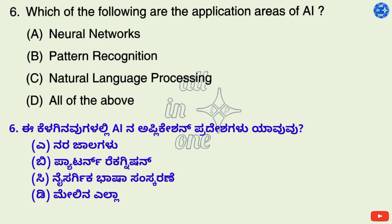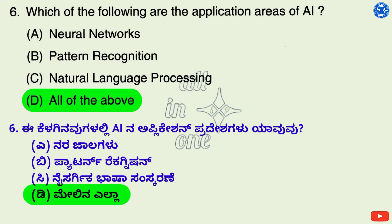Which of the following are the application areas of AI? Options: A. Neural networks, B. Pattern recognition, C. Natural language processing, D. All of the above. The correct answer is option D: All of the above. The mentioned options are the informed search methods used in artificial intelligence.